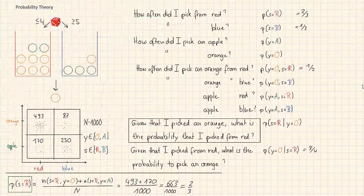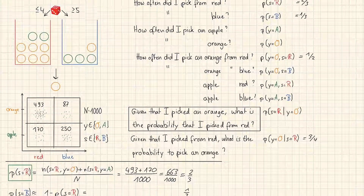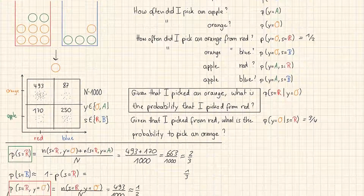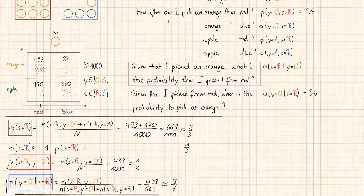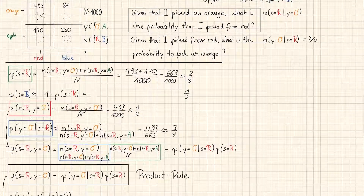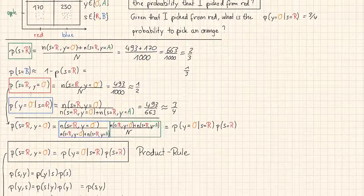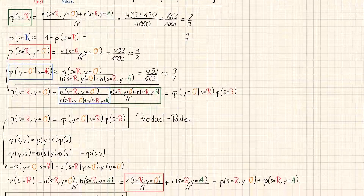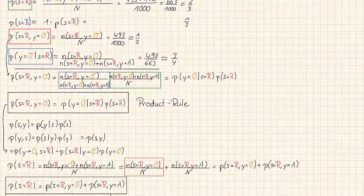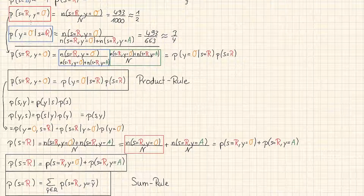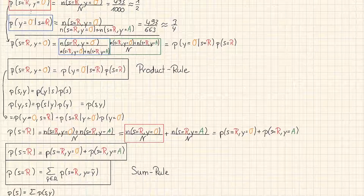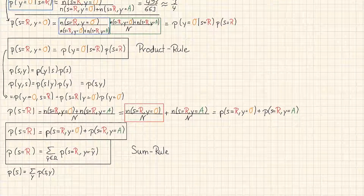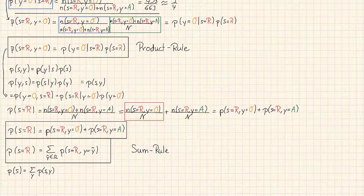The next important formula for machine learning is Bayes' rule. In this video we got to know the product rule and the sum rule, which are the basic formulas we need to derive Bayes' rule — so stay tuned and see you in the next video.